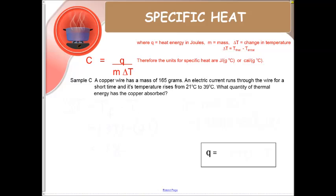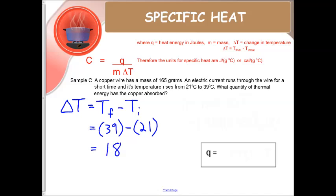Let's see how you did. So first thing we need to do is figure out what is our change in temperature. So delta T is T final minus T initial. So that would be 39 minus 21, which means our delta T is 18.